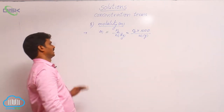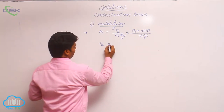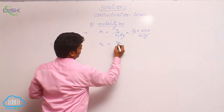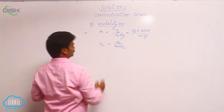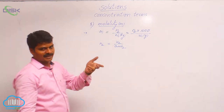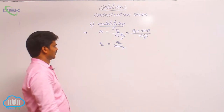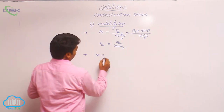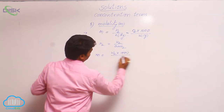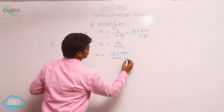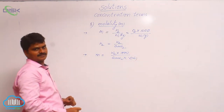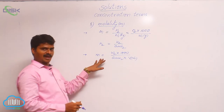N2 is the number of moles of solute, where N2 = W2 / gram molecular weight 2. The number of moles of any substance is obtained as weight divided by gram molecular weight. Substituting into the formula, we finally get m = W2 × 1000 / (gram molecular weight of solute × weight of solvent in grams).